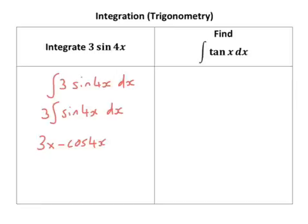But I'm also, because it's 4x, I need a quarter of that. Because if I differentiated cosine of 4x, I'd end up with minus 4 sine 4x. So I've got to have a quarter of that.